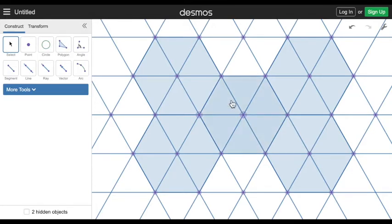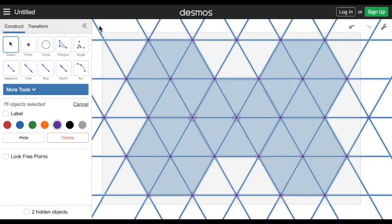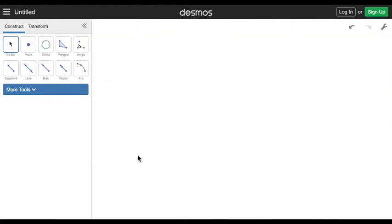So this time instead of using circles we've done it with just straight lines. Yeah well we did use some circles at the beginning but the actual pattern is just straight lines. Now I'm going to make one final pattern so I'm going to delete, select everything, delete.